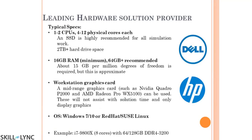Hardware is also an important consideration for running simulations. A dedicated workstation is preferable over a normal laptop, though laptops can be used — the runtime will just be much longer. Typically a workstation should have 4 to 12 physical cores per CPU, and a solid-state drive is recommended as it is faster, though more expensive than a regular hard drive. At least 16 GB of RAM is recommended; for large models with heavy element counts and complex contacts, 64 GB is a common minimum at many MNCs.